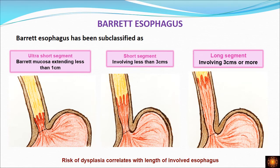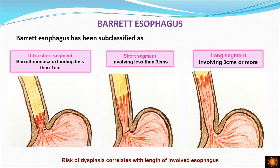Depending upon the segment of esophagus involved, Barrett's esophagus is subclassified into three types. First, ultra short segment: Barrett mucosa extending less than one centimeter in length. Second, short segment: tongue-like projections of metaplastic epithelium extending less than three centimeters from the gastroesophageal junction. Third, long segment: involvement extending more than three centimeters from the gastroesophageal junction. Longer segment involvement carries more risk of developing dysplasia — the risk of dysplasia correlates with the length of involved mucosa.